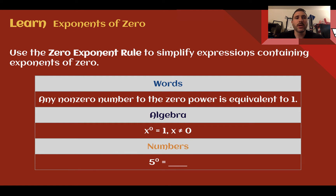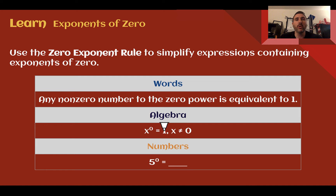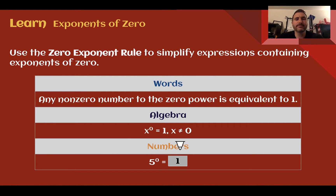Exponents of zero. Use the zero exponent rule to simplify expressions containing exponents of zero. The zero exponent rule says that any non-zero number to the zero power is equivalent to 1. So any number to the zero power is equal to 1, unless that number is 0. 0 to the zero power is not 1. So 5 to the zero power would be equal to 1, 30 to the zero power would be equal to 1, and 3 billion to the zero power would also equal 1.